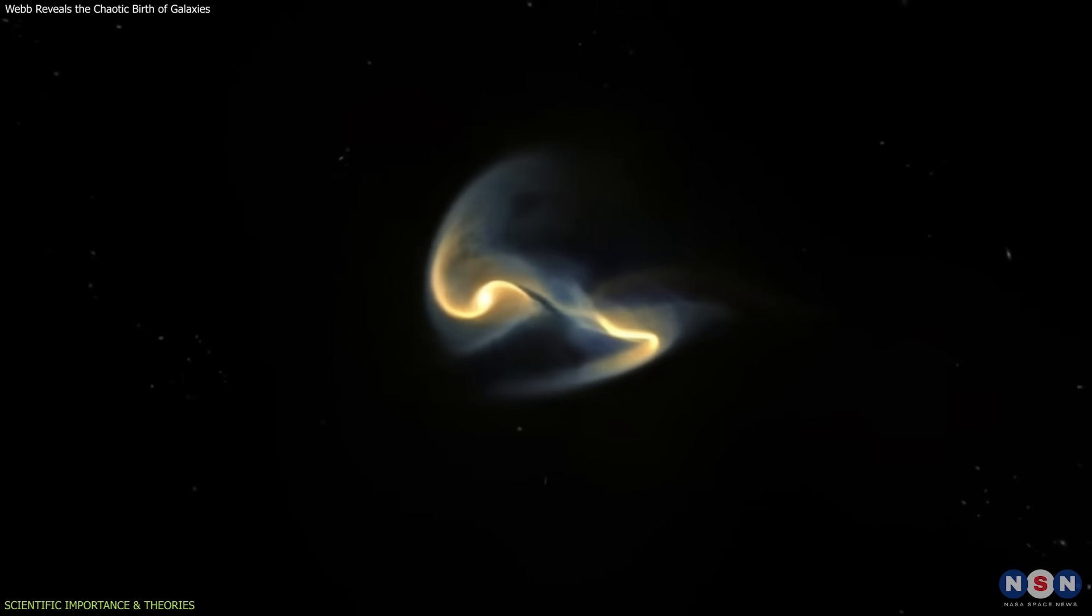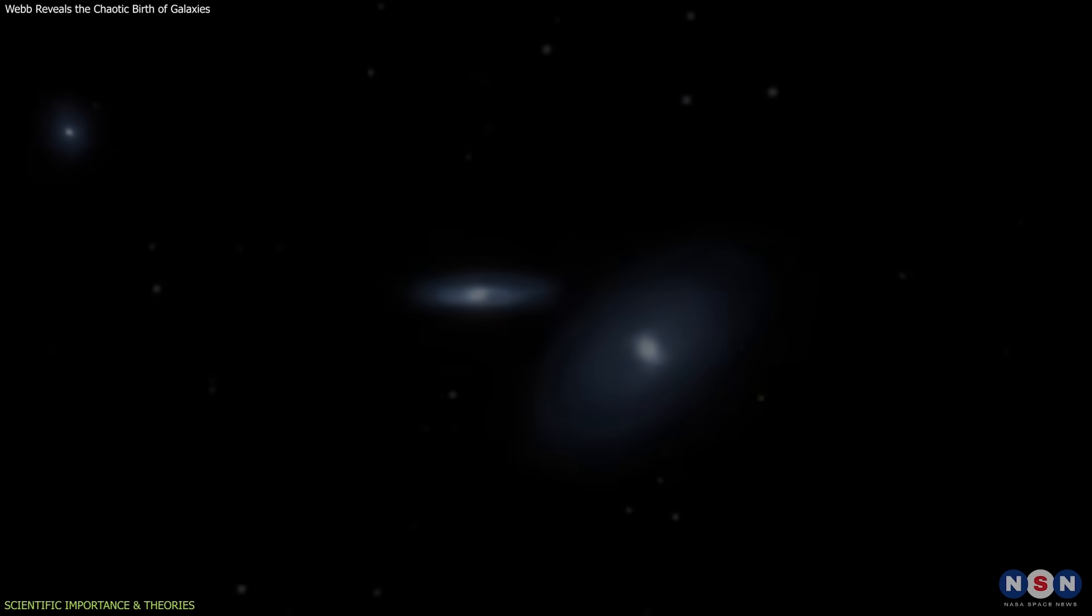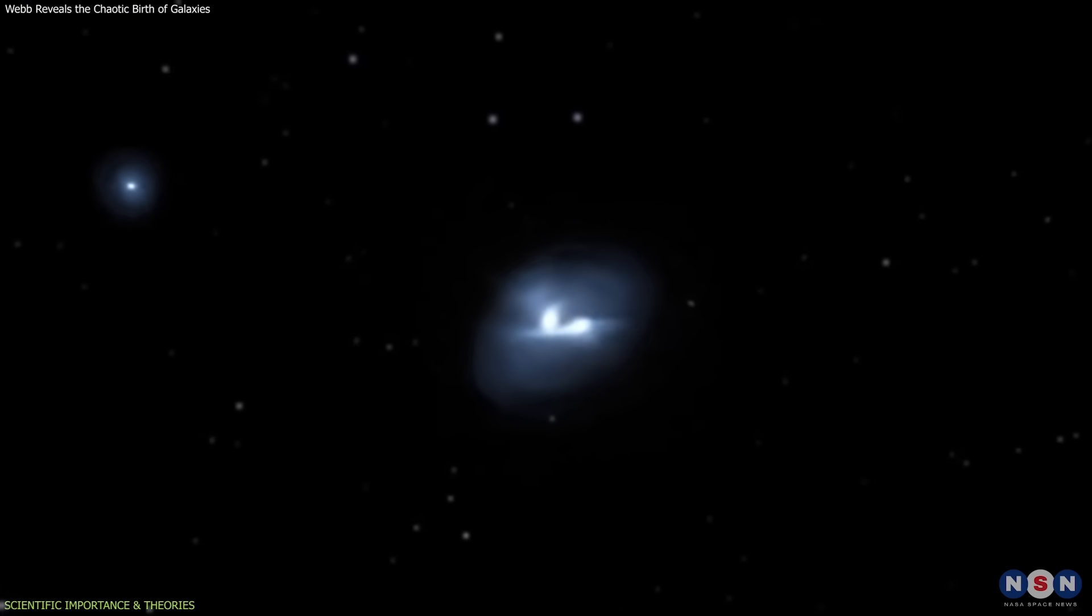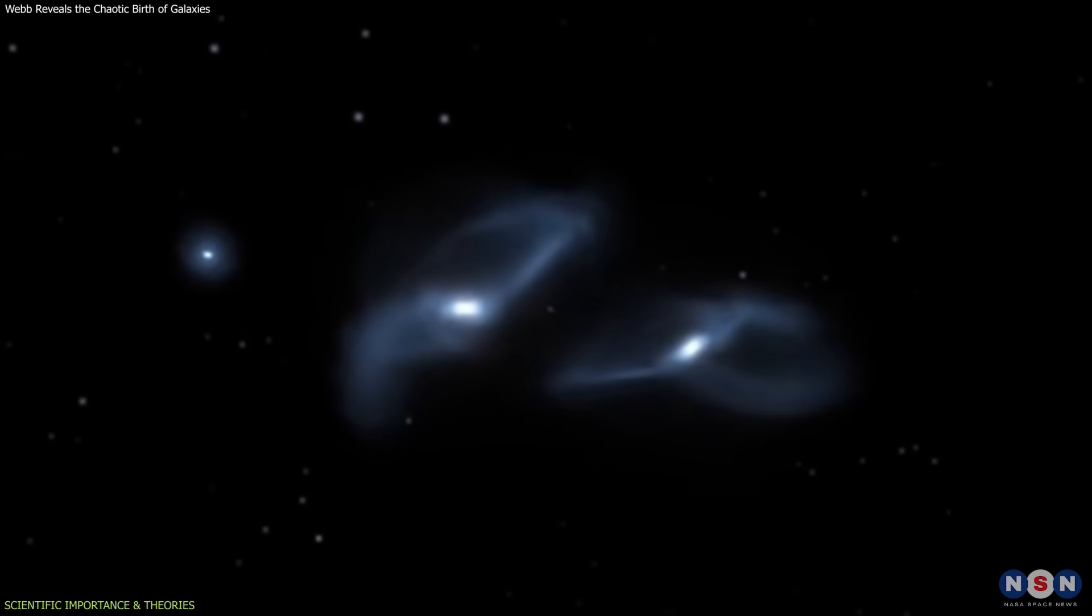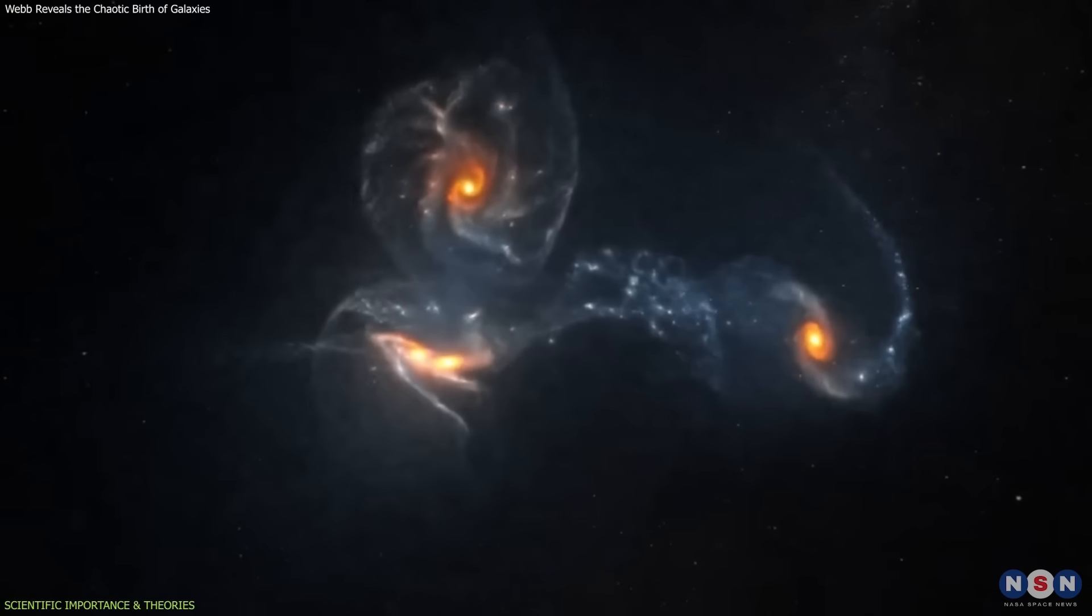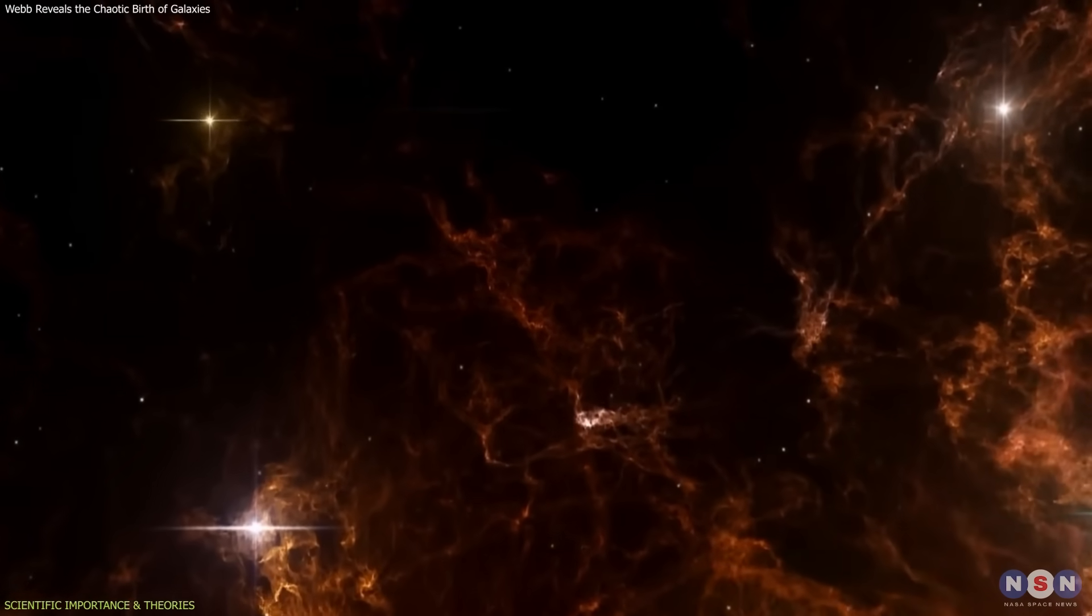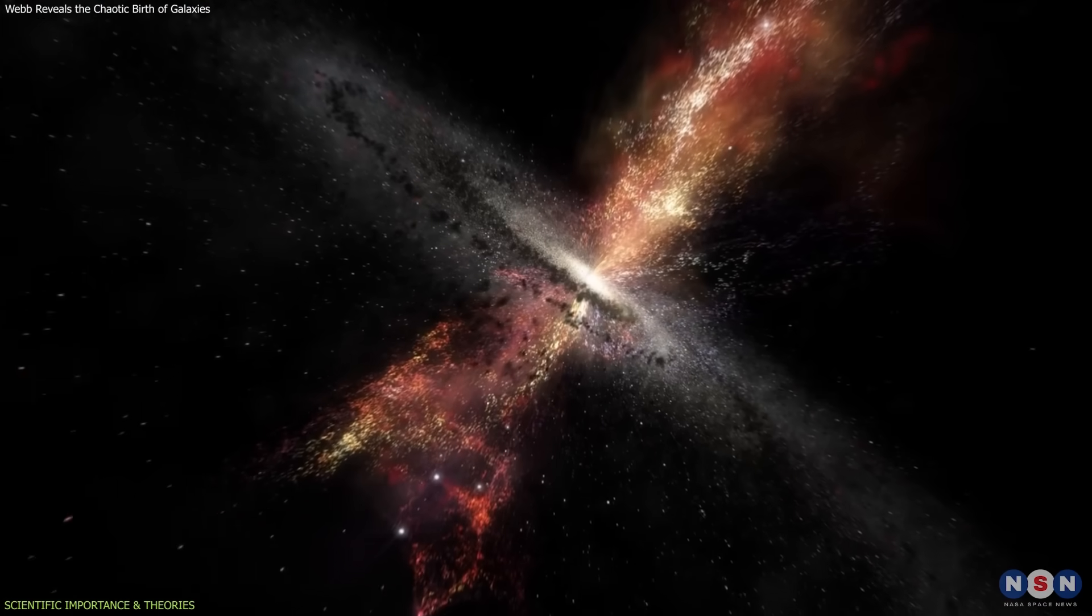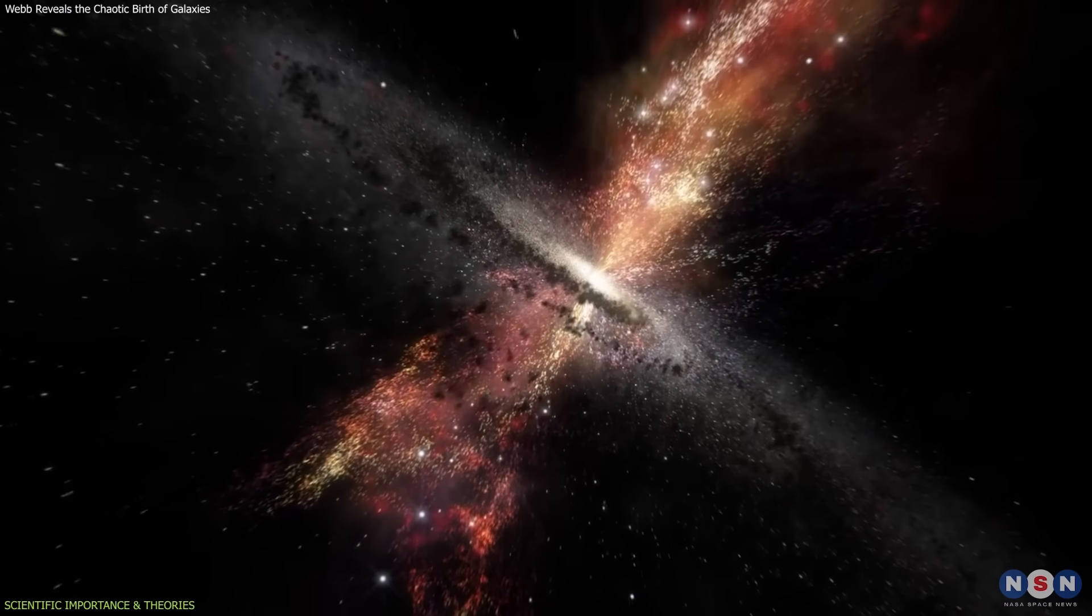Second, frequent mergers and bursts of star formation. In the young universe, collisions between galaxies were common. Each merger injected energy, disrupted developing structure, and triggered rapid star formation. That feedback amplified the turbulence.